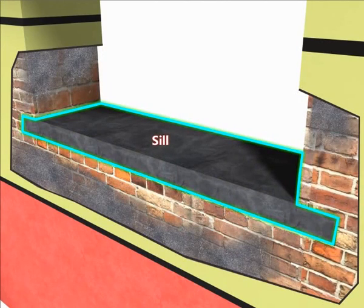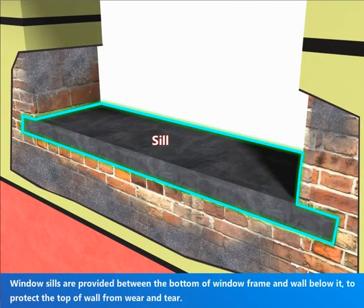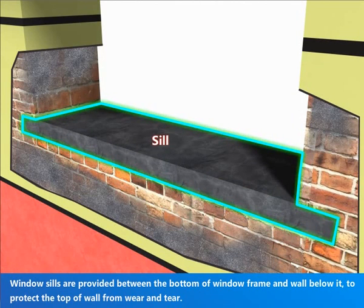Window Sills are provided between the bottom of the window and wall below it to protect the top of wall from wear and tear.